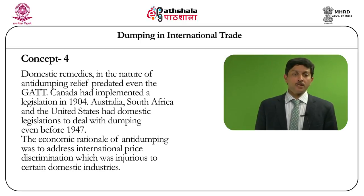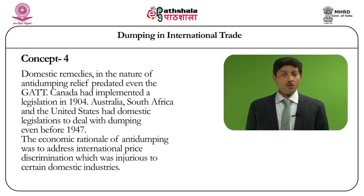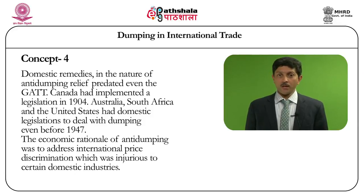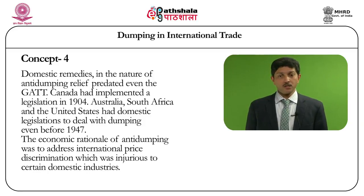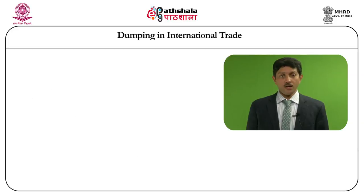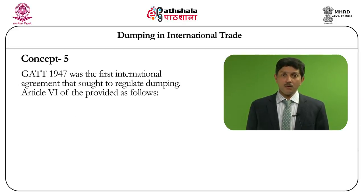Dumping remedies in the nature of anti-dumping relief predated even the General Agreement on Tariffs and Trade. Canada had implemented legislation almost 100 years ago. Australia, South Africa, and the United States had domestic legislation to deal with dumping even in 1921, long before 1947 when the GATT entered into force. The economic rationale for anti-dumping was to address international price discrimination which was injurious to certain domestic industries. GATT 1947 was the first international agreement that sought to regulate dumping.